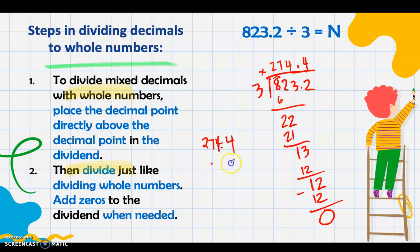Do not forget to align. If you're going to divide 8, you align it to the quotient on top of the 8. If you're going to use 82, then you align it properly to whichever digit you are dividing.